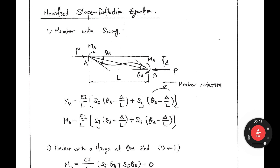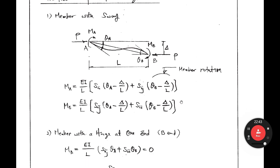If you remember your undergraduate course, in the sway case you also use expressions like (4ζA minus delta over L) and (2ζA minus delta over L). The change here is simply that the classical coefficients 4 and 2 are replaced by the stability functions SII and SIJ.